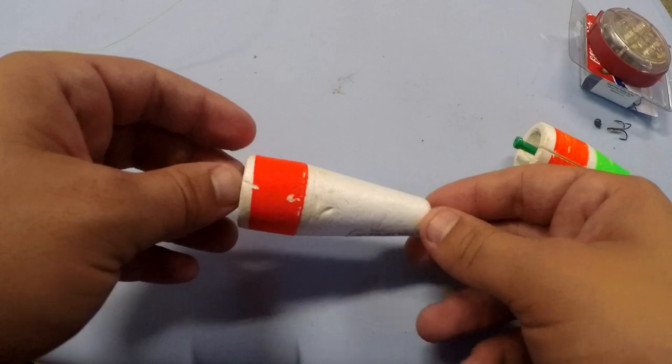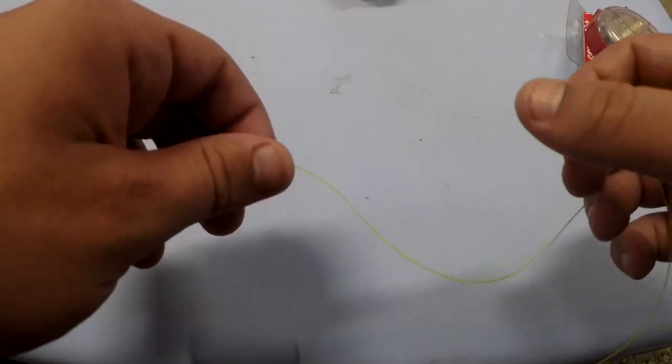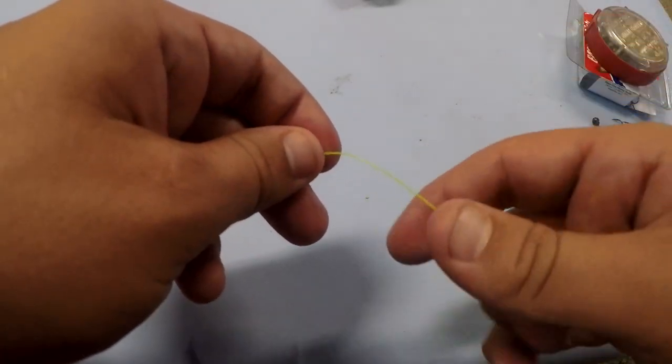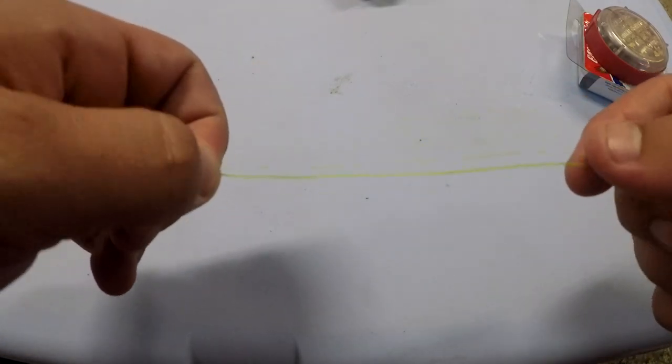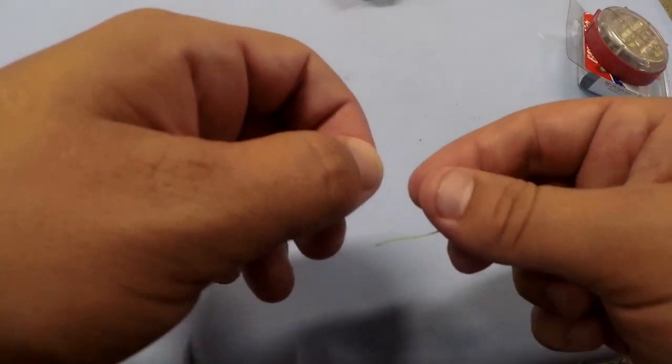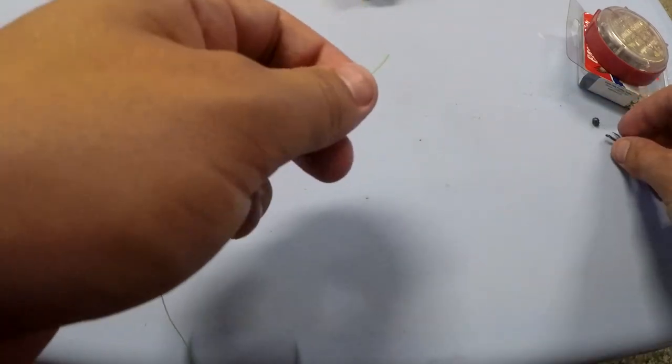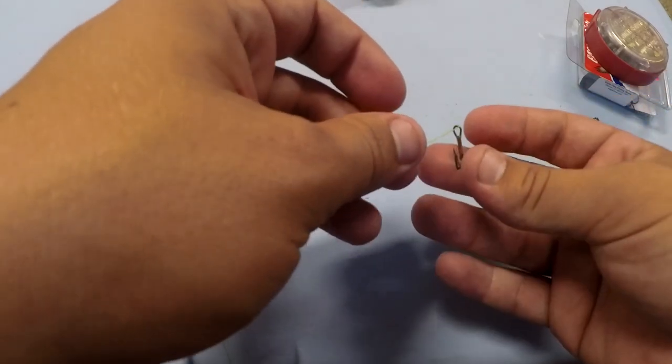Usually I would tie this rig to 8 to 12 pound mono. However, for this example, I'm using some high-vis green line just to help y'all see a little bit better. To start off, we're going to simply take our treble hook, put it on the line, and tie a uni knot.